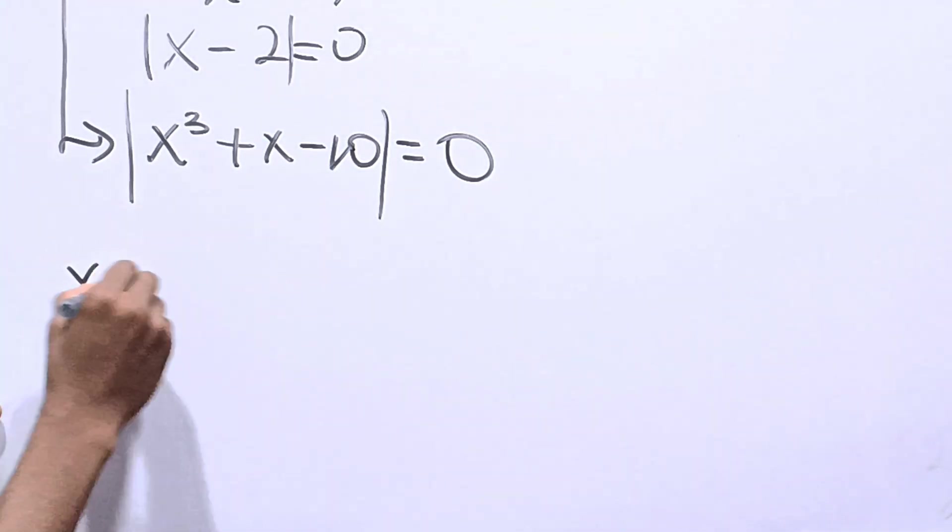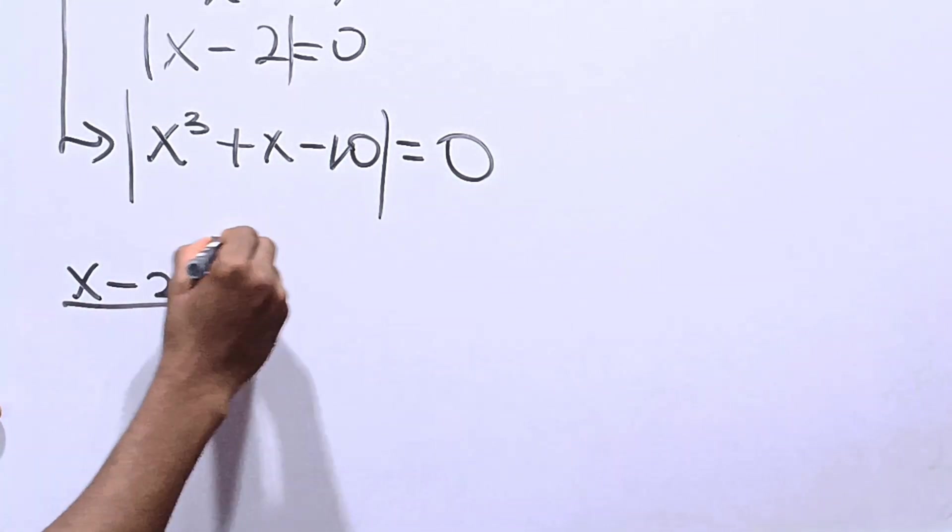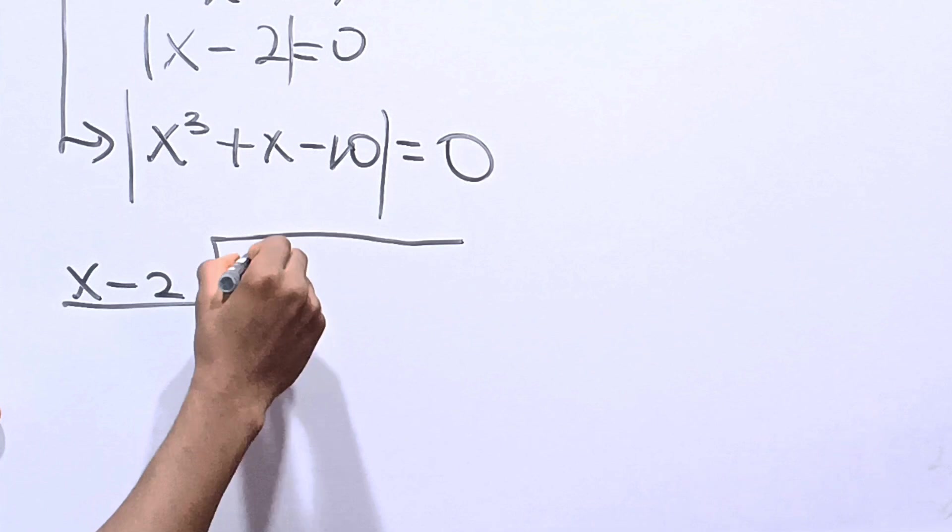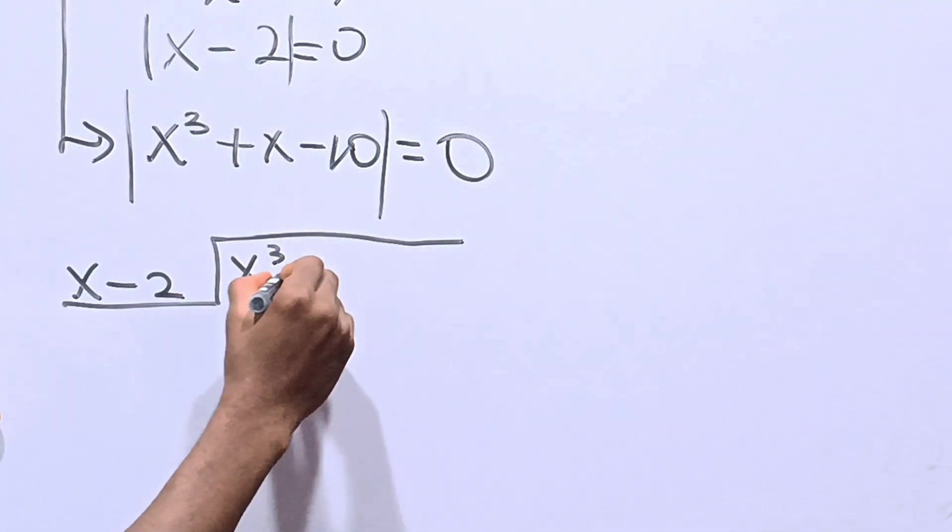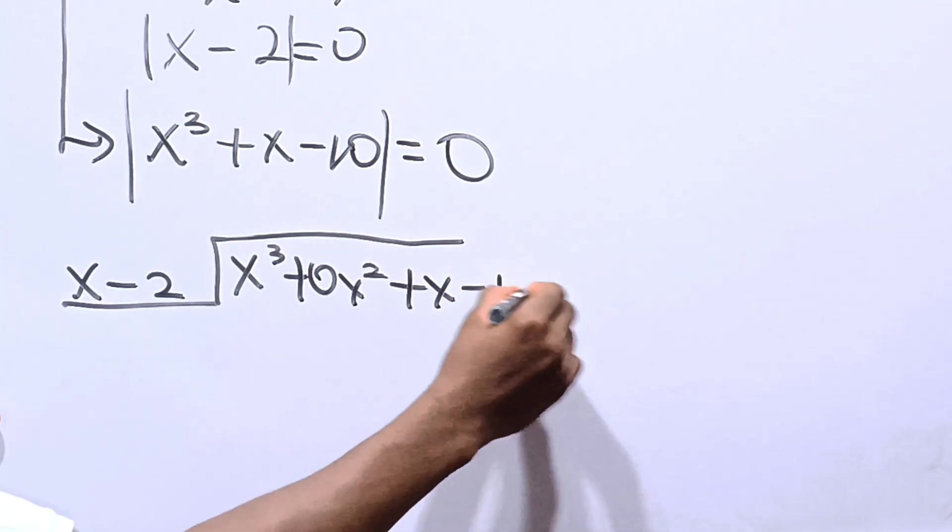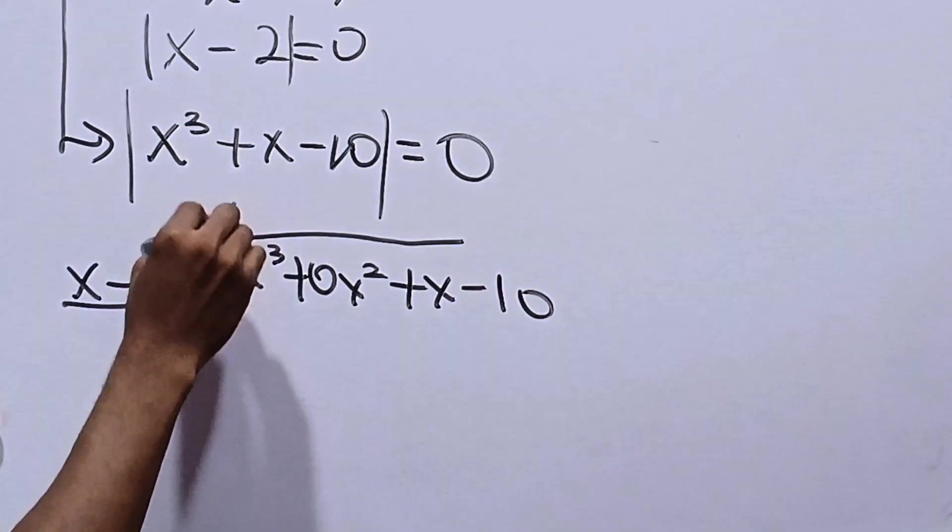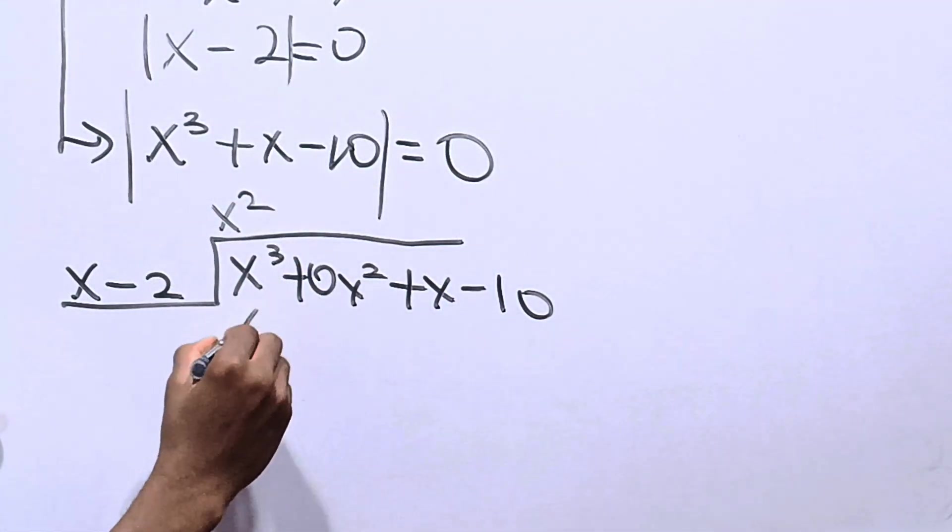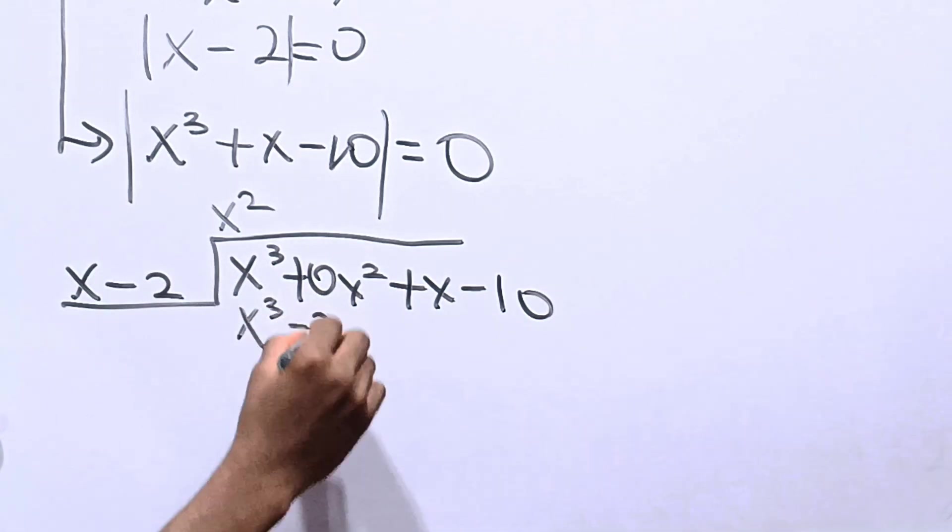Outside and inside, we have x cubed plus 0x squared plus x minus 10. X into this is x squared. We have x cubed minus 2x squared.